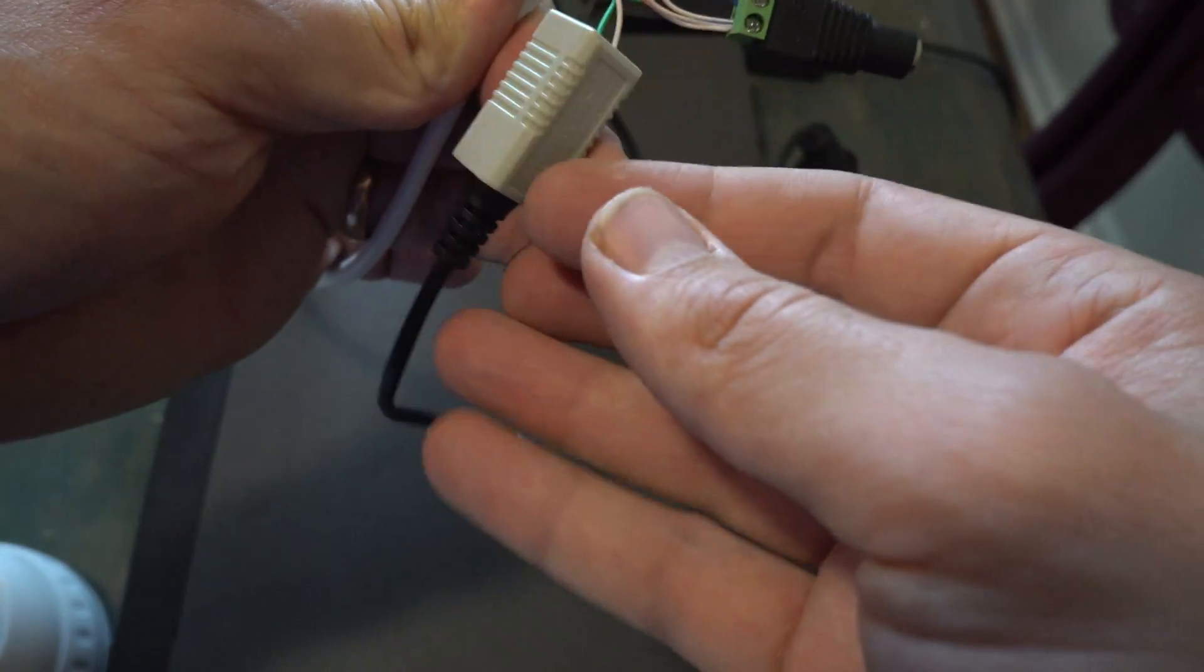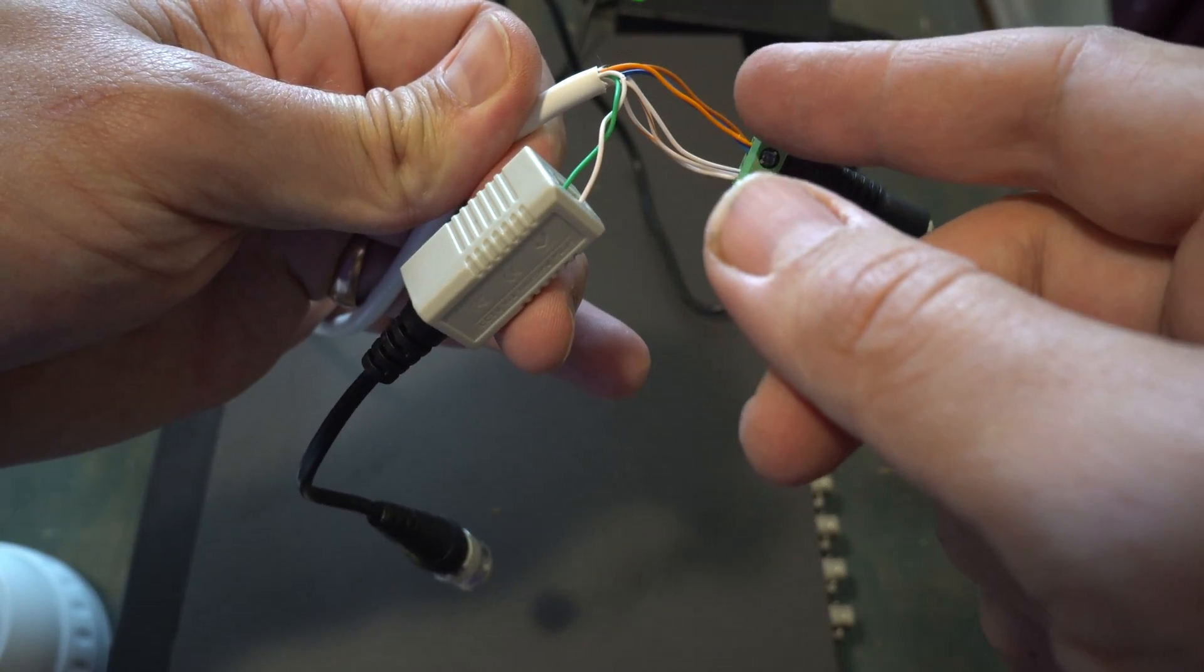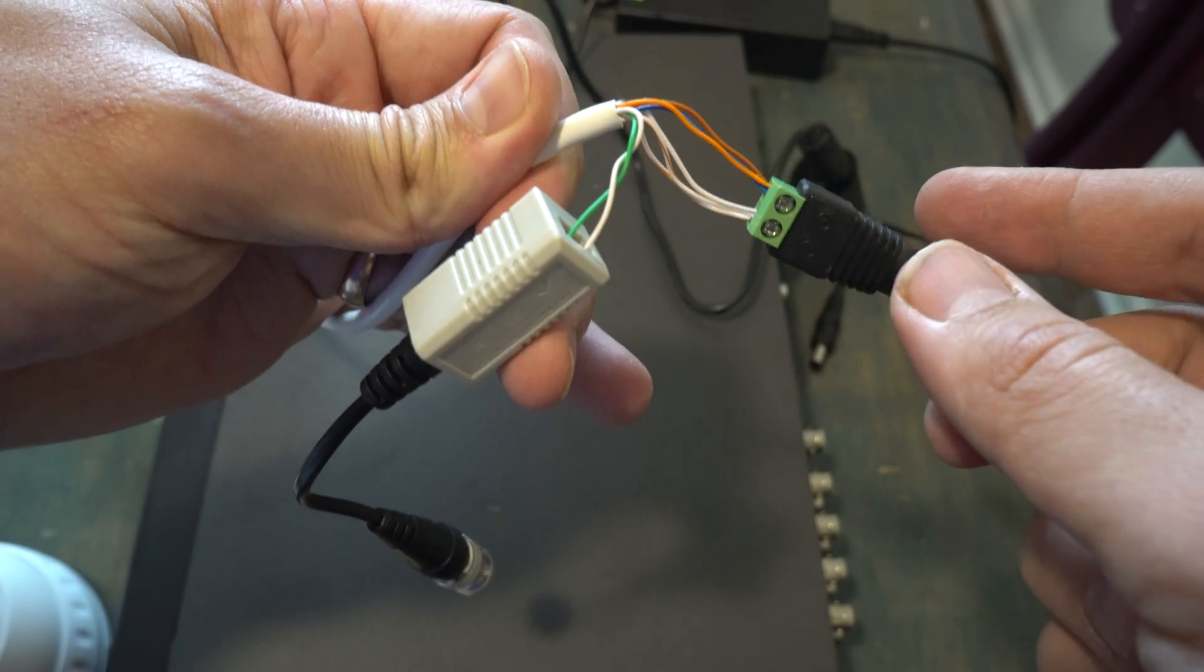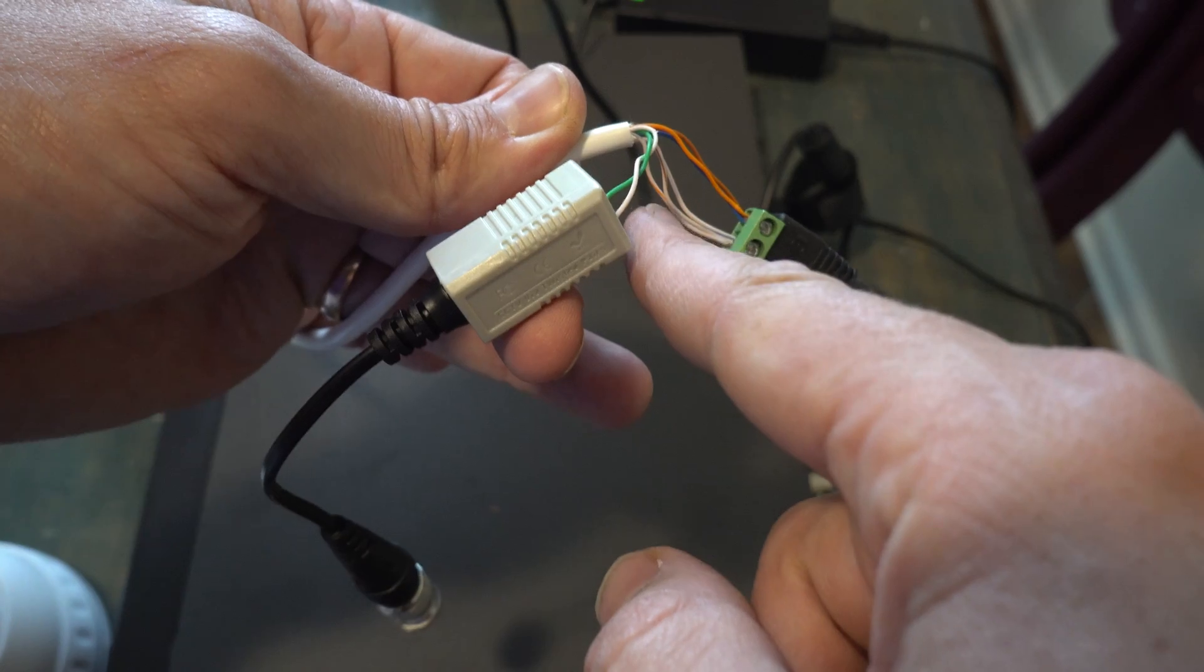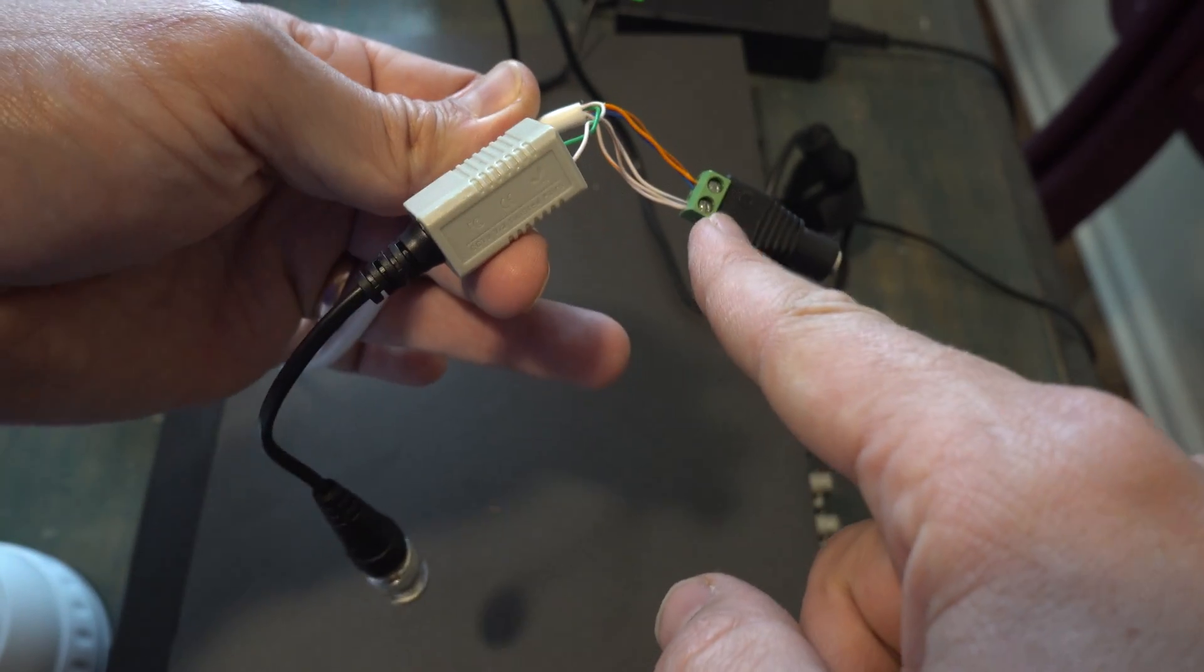And then the other three pairs, orange, brown, and blue, get used for the power. So I just grouped all the solid colors together as positive and all the striped colors together as negative.